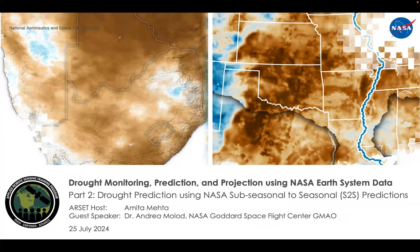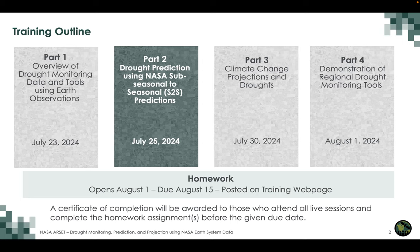Hello everyone, welcome back to Part 2 of this training on drought monitoring, prediction, and projection using NASA Earth System data. Today we will focus on drought prediction using NASA sub-seasonal to seasonal, or S2S, predictions. We have a guest speaker, Dr. Andrea Molod from NASA Goddard Space Flight Center. She is the lead in developing S2S modeling and prediction data. In the previous session we saw drought monitoring data and tools using Earth observations, and today we will focus on model predictions on sub-seasonal to seasonal scale.